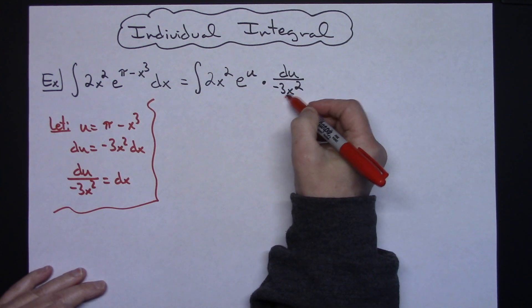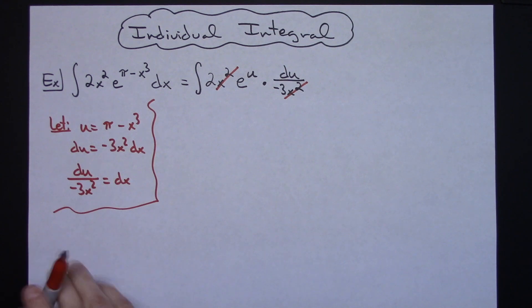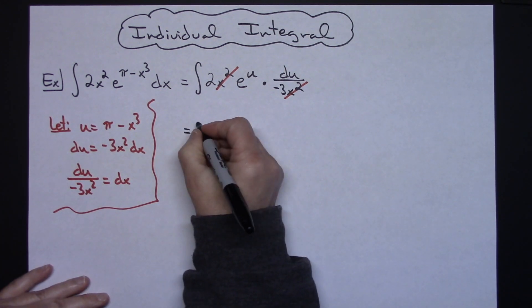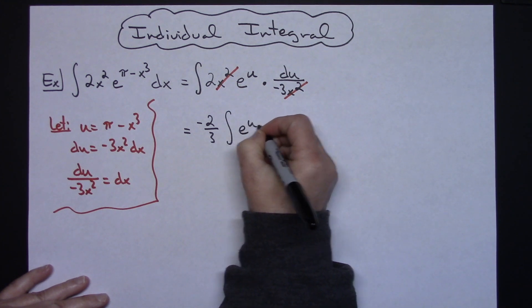That's going to allow my x squared to cross out. And I'm going to be able to pull out a negative 2 thirds out in front of my integral. So we'll have a negative 2 thirds integral of an e to the u du.